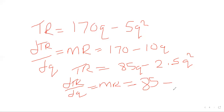Then the 2.5, we multiply it by the 2, which is the power of Q, giving us 5. Then Q, since it's to the power 2, subtract 1 to get Q to the power 1, so we have Q. So we're going to have 85 minus 5Q — and yes, she is correct.